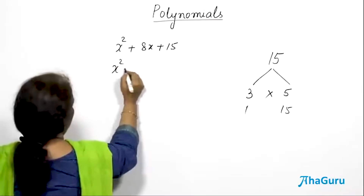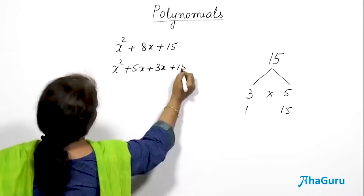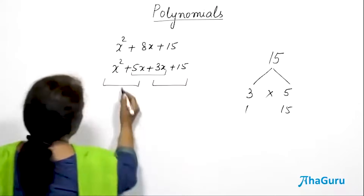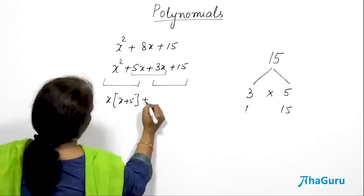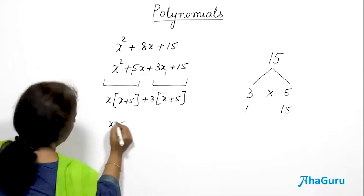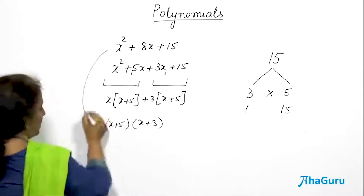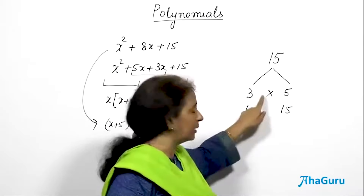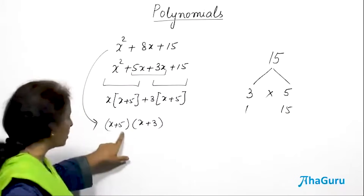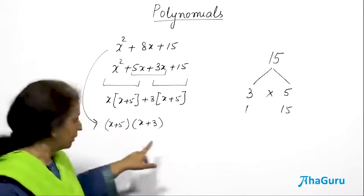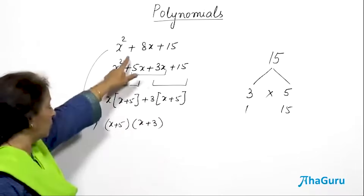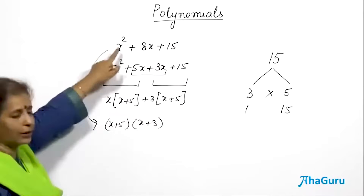This can be written as x² + 5x + 3x + 15. This 5 and 3 make it 8. Taking the first two terms and the next two terms: x(x + 5), then 3(x + 5). Between the two sets, x + 5 is common, leaving x + 3. So this quadratic polynomial can be obtained by multiplying (x + 5) into (x + 3) — two linear polynomials, each with highest power 1.